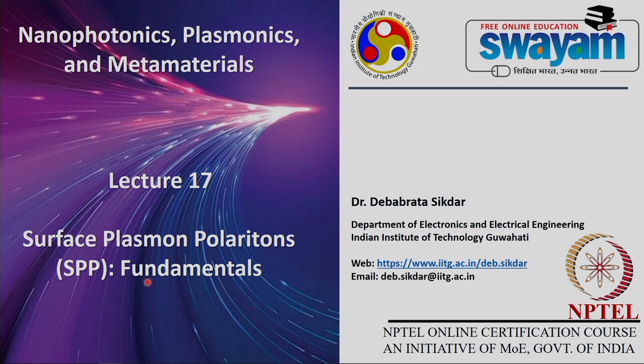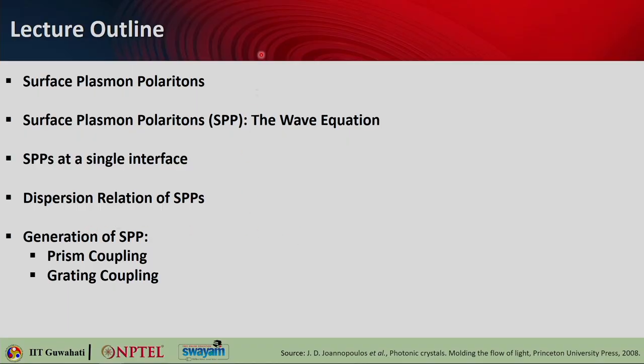Hello students. Welcome to lecture 17 of the online course on nanophotonics, plasmonics and metamaterials. Today we will be covering surface plasmon polaritons, or in short SPP, and we will look into their fundamentals. Here is the lecture outline. We will discuss about surface plasmon polaritons, obtain the wave equation, look into SPPs at a single interface, the dispersion relationship of SPPs, and if time permits we will look into their generation, or else we will take it into the next lecture.